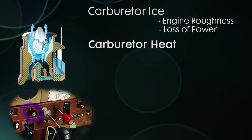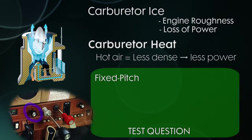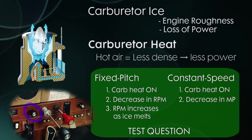One disadvantage of carburetor heat is that hot air is less dense than cold air, so there is less air going through the carburetor when carb heat is on. In a fixed pitch propeller airplane, the RPM will drop when you apply carb heat, and as the ice melts, the RPM will slowly start to increase. With a constant speed propeller, you'll see a drop in manifold pressure, and then a slow increase as the ice melts.